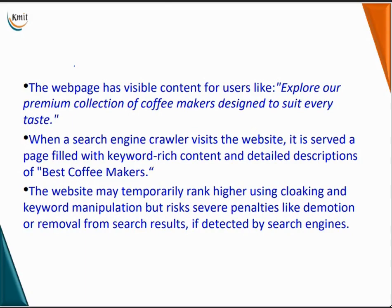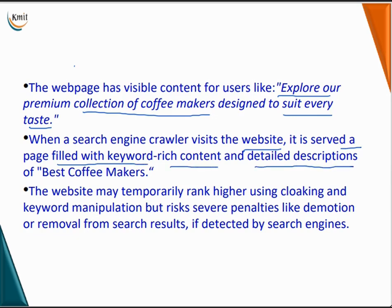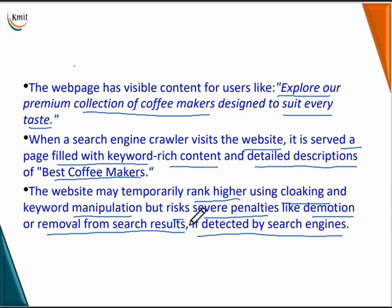For example, a web page may show visible content to the user like 'Explore our premium collection of coffee makers designed to suit every taste', but when a search engine crawler visits the website, it is served a page filled with keyword-rich content and detailed descriptions of best coffee makers. The website may temporarily rank higher using cloaking and keyword manipulation, but risks severe penalties, demotion, or removal from search results if detected by search engines. Thank you.